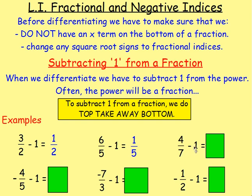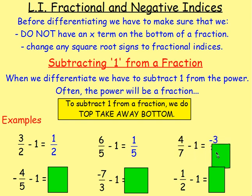If you have 4 sevenths, take away 1: you do 4 take away 7, which gives you negative 3. And we're working with sevenths, so it will stay as sevenths. The negative can be at the top, at the side, or at the bottom as well — there are three ways you could write that.